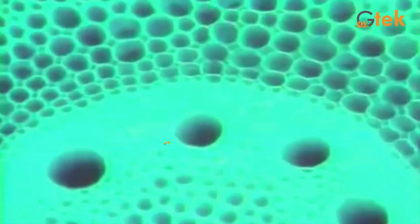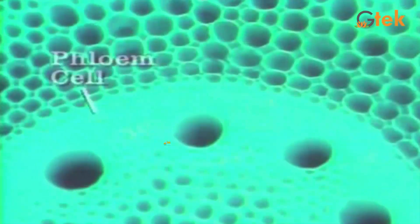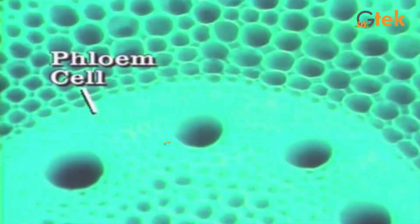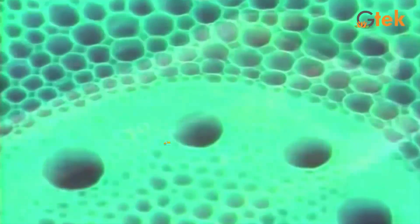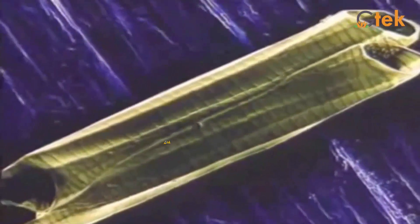This portion is called the phloem cell, which is represented here, and this whole portion is called the xylem cell. This portion is fully covered by phloem and xylem cells, as you can see.